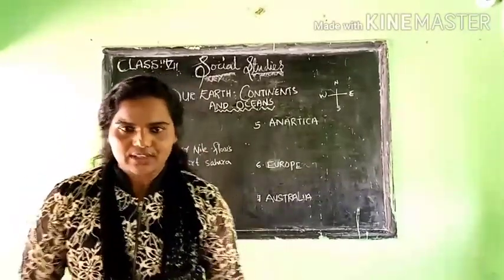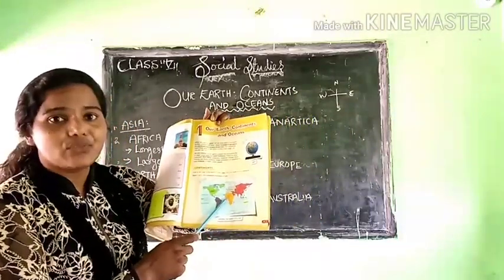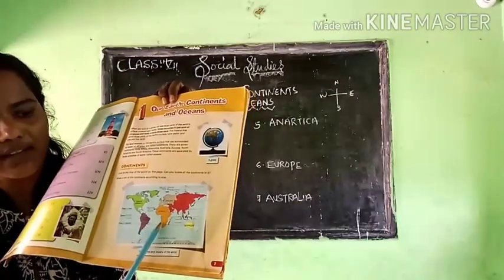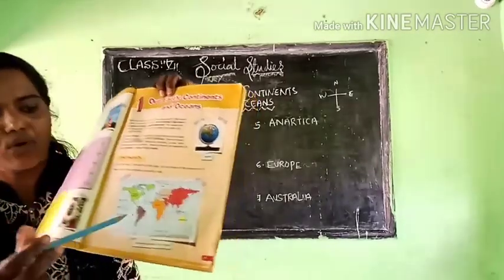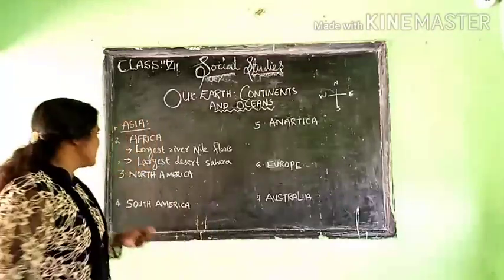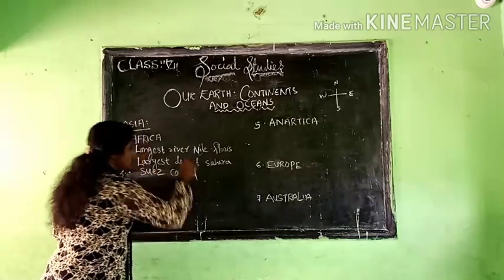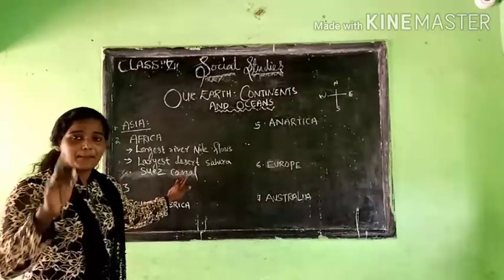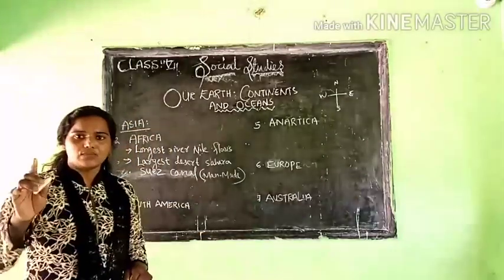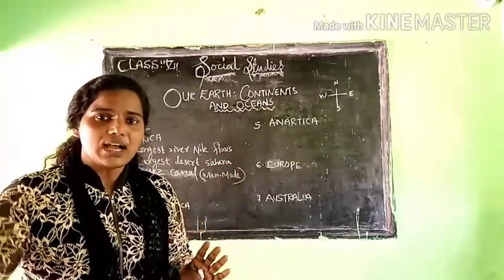The third speciality of the African continent: if you look at the flattened map of a globe, in between the Asian continent and the African continent, there is a small gap. This small gap is known as the Suez Canal. The Suez Canal is actually a man-made canal.